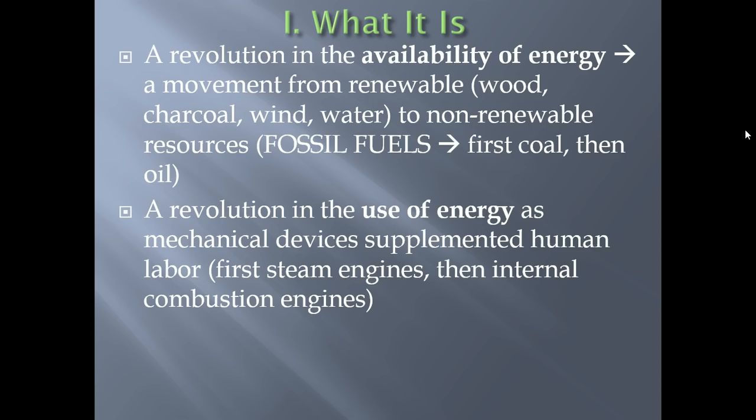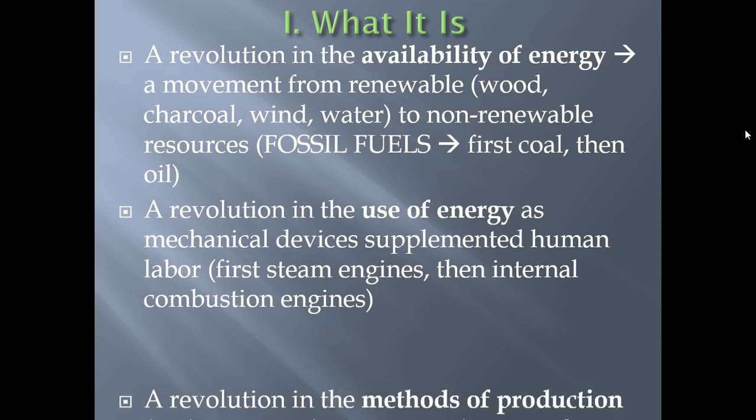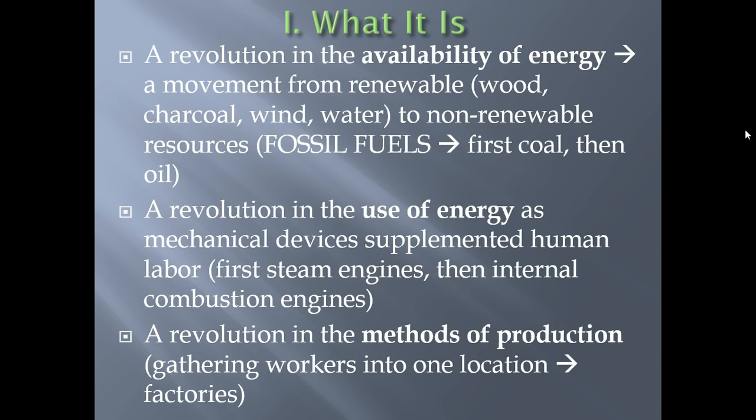After a while, internal combustion will be invented, but that won't be for about 100 years after the steam engine. Putting a steam engine onto a mechanical device allows you to conduct production in a brand new way and tends to pull production toward one center. Rather than having small workshops spread out over disparate areas, you get a revolution in the methods of production. For the purposes of this introduction, what this really means is gathering all your workers together into one location — which will be called a factory. Factories really did not exist before the Industrial Revolution on any great scale. Industrializing production, how energy is used, and how machines are gathered into factories will really form the basis of the Industrial Revolution.